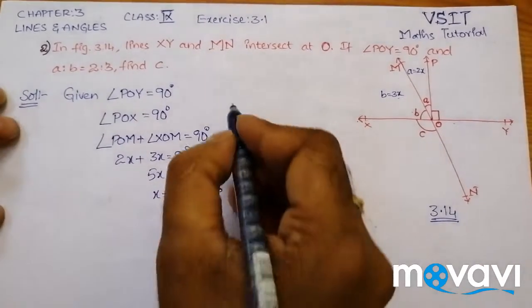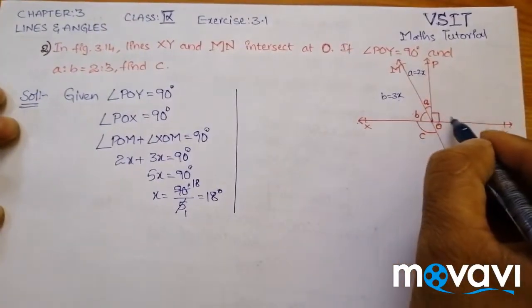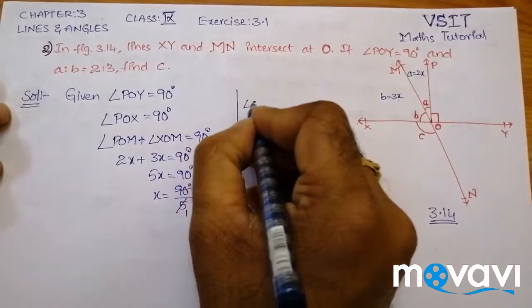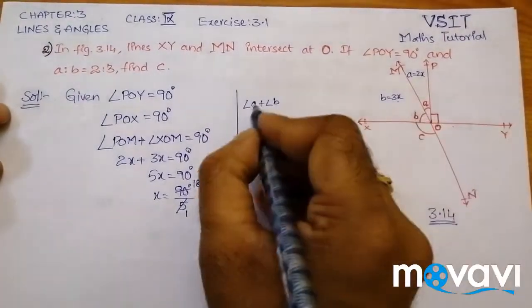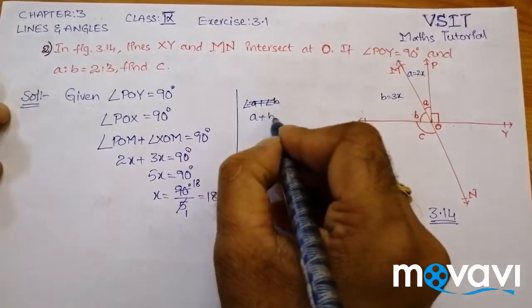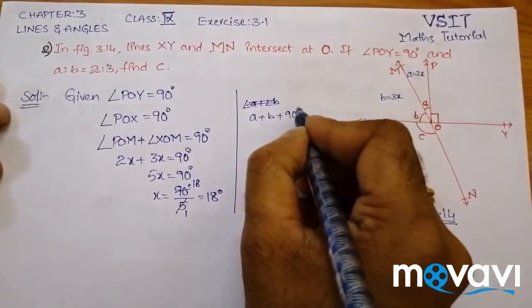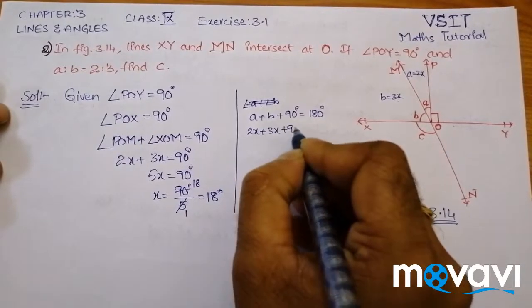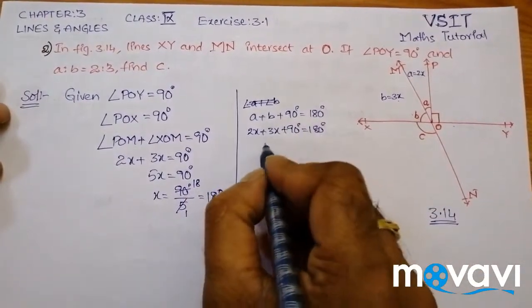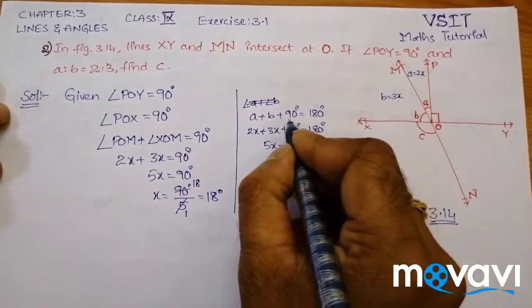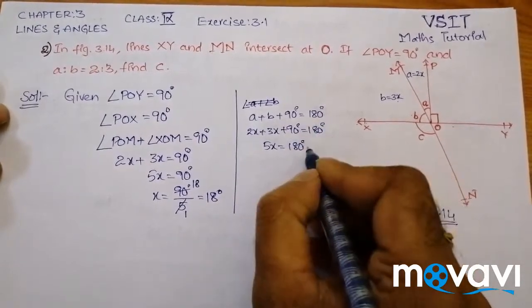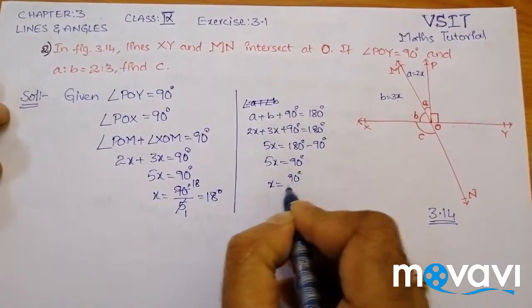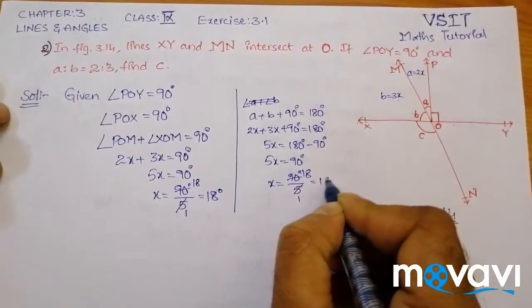We can also get this in an alternative way. Since XY is a straight line, this angle equals 180 degrees. So angle A plus angle B plus 90 degrees equals 180 degrees. That is 2X plus 3X plus 90 equals 180, so 5X equals 90 degrees, and X equals 90 divided by 5, which is 18 degrees.